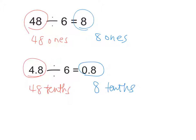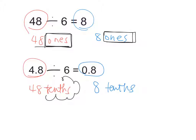What pattern do you notice? Tara says they're both 8. But what other pattern is there? Itai observes that the decimal moves between the 4 and the 8 in the dividend and stays in the quotient. When my dividend is 48 ones, my quotient is 8 ones. When my dividend is 48 tenths, my quotient is 8 tenths. Arhan explains: whatever place value the dividend is in, the answer will also be in that place. So whatever place value you have in your dividend, you must also have in your quotient.